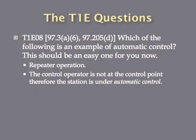Which of the following is an example of Automatic Control? We talked about this a few questions ago, so this should be getting familiar. A repeater station, or repeater operation, is an example of something that would be under Automatic Control. So whenever the control operator is not at the control point, the station is under Automatic Control in order to conform with FCC rules. Repeater operation is the one that falls under Automatic Control.